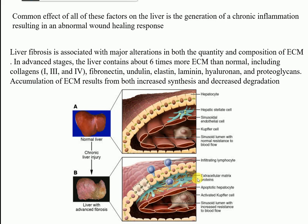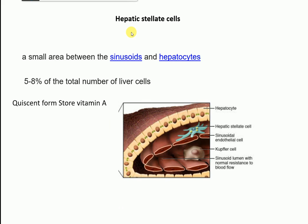You might be asking: what is the reason for this accumulation of extracellular matrix? The reason is either increased synthesis of these extracellular matrix components or decreased degradation. In fibrosis, there is decreased degradation and increased synthesis - a disbalance between synthesis and degradation - which is why this accumulation occurs. The key point is that in a fibrotic liver there is five to six times more accumulation of extracellular matrix proteins.